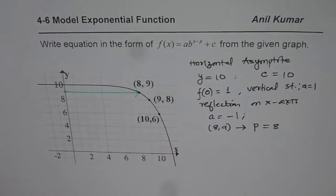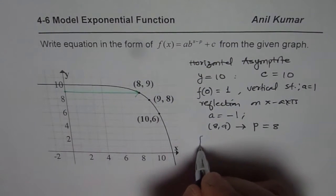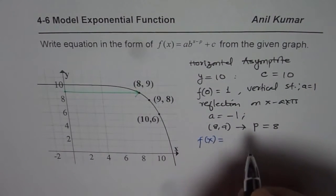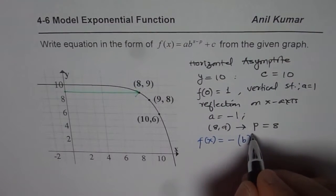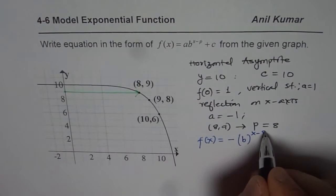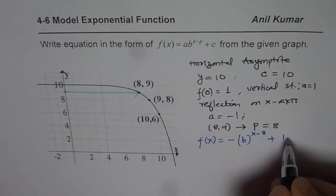Now putting these things together into our equation, we get the equation of the form f(x) equals to a, we are assuming as minus 1, b to the power of x minus 8 plus c is 10 for us.